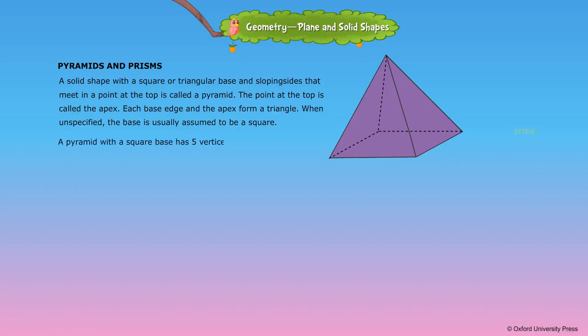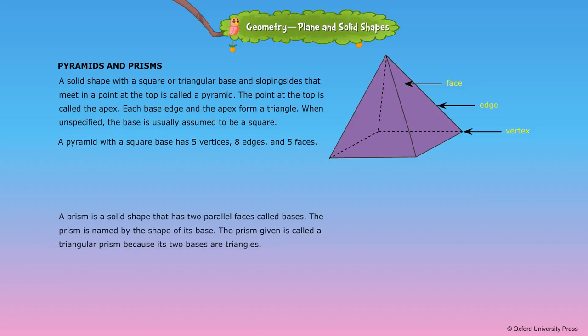A pyramid with a square base has 5 vertices, 8 edges, and 5 faces. A prism is a solid shape that has 2 parallel faces called bases.